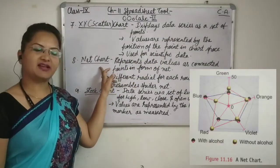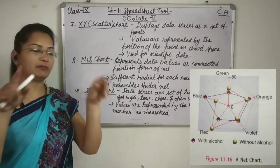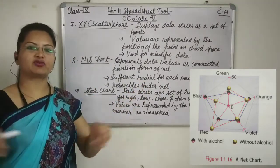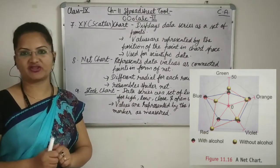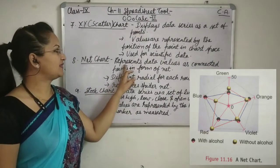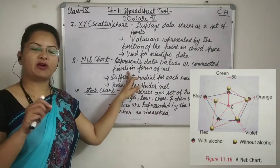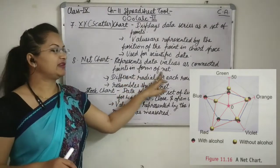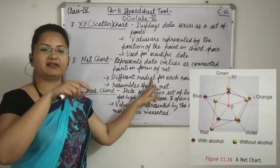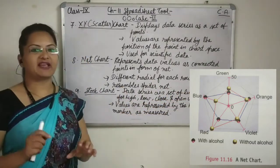Now net chart. As the name suggests, it's like a net. There will be a radial for every data series and that is why if there are so many radials, it seems like a spider net chart. It is also known as spider net chart or spider chart. It represents the data values as connected points — points will be plotted and those points will be connected and it will form a net. Every radial will be for each row of data and it resembles the spider net.